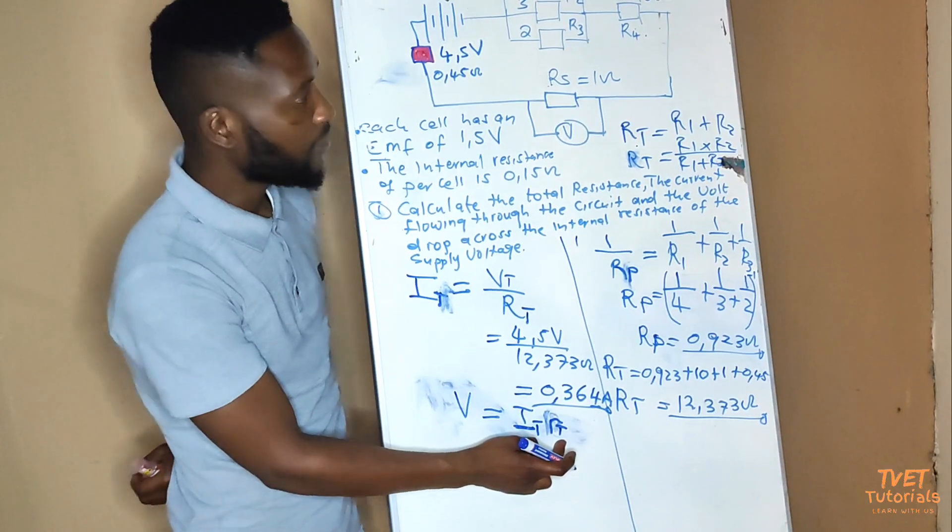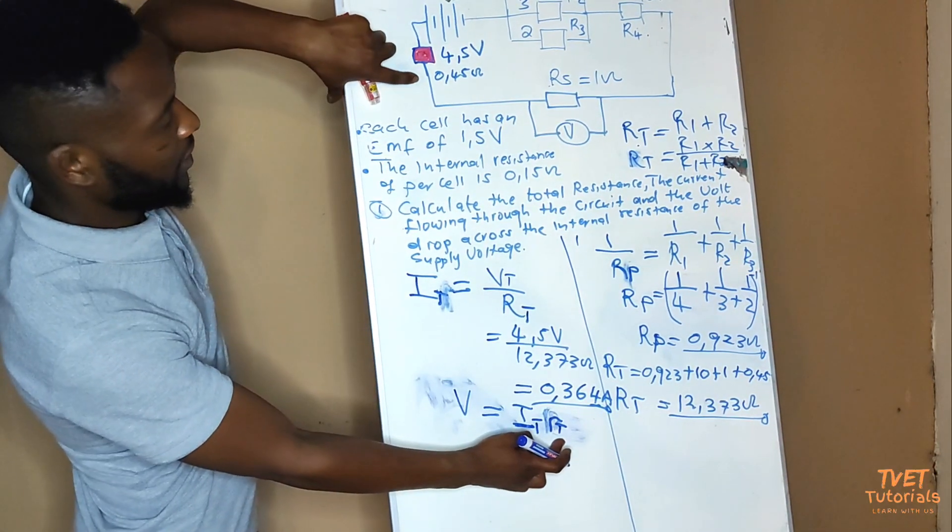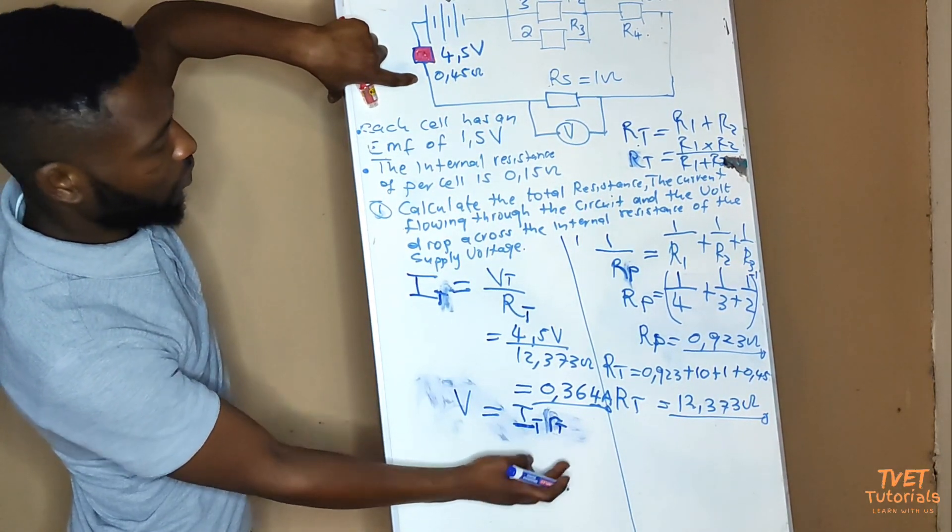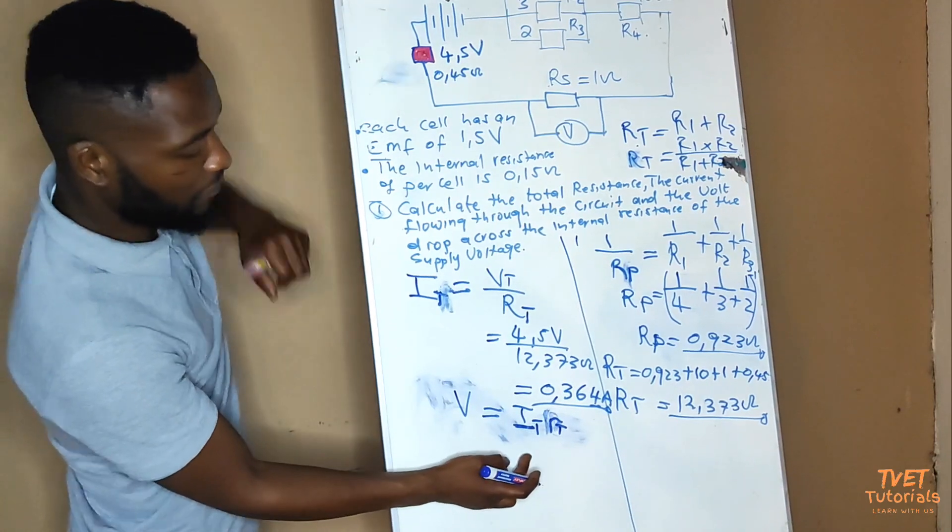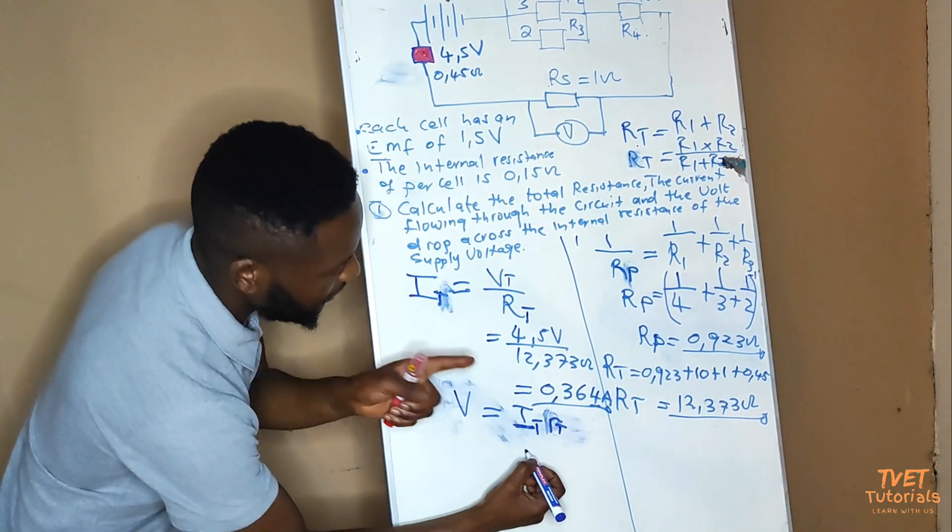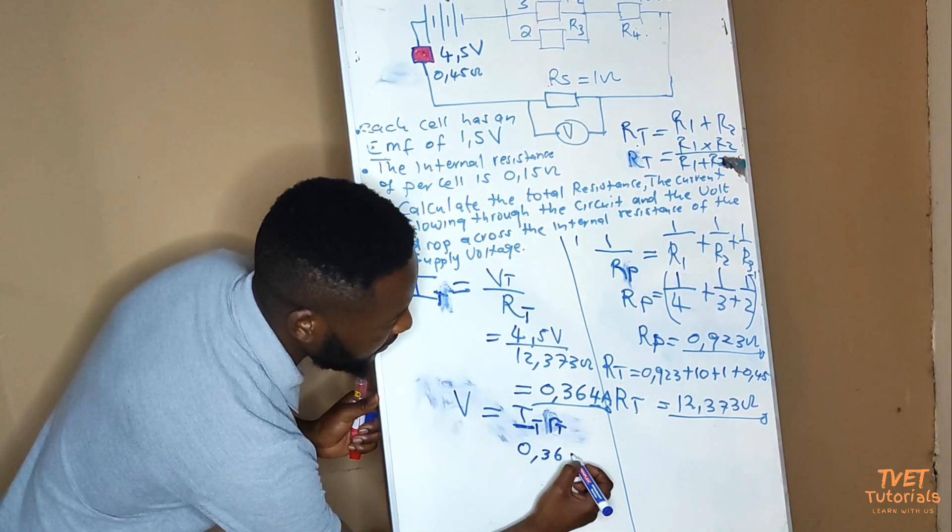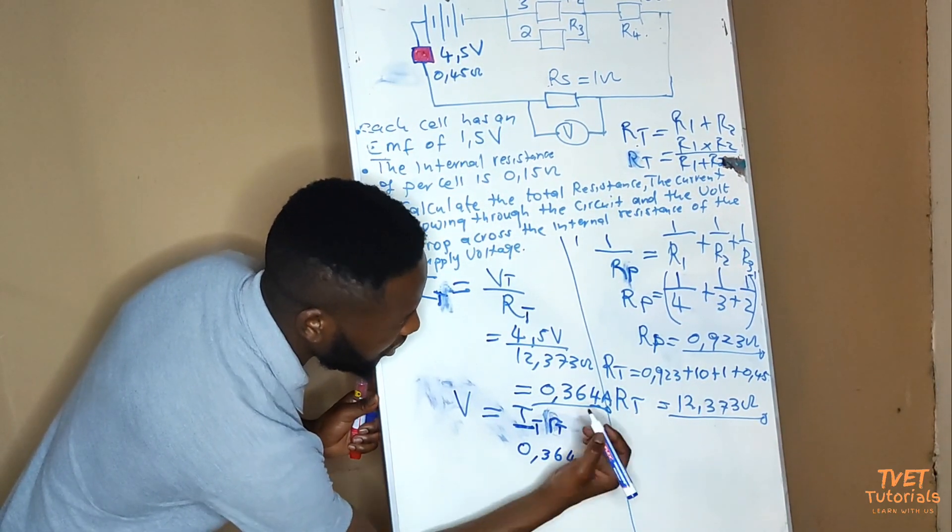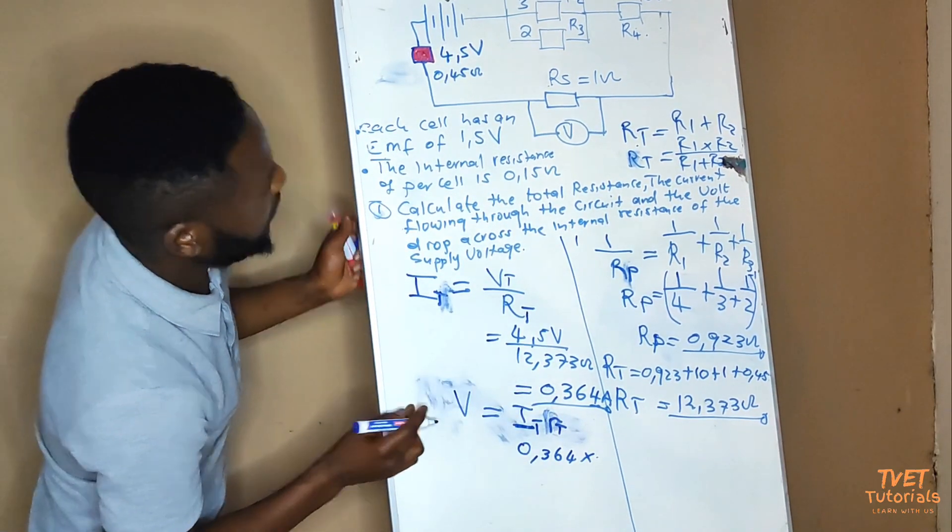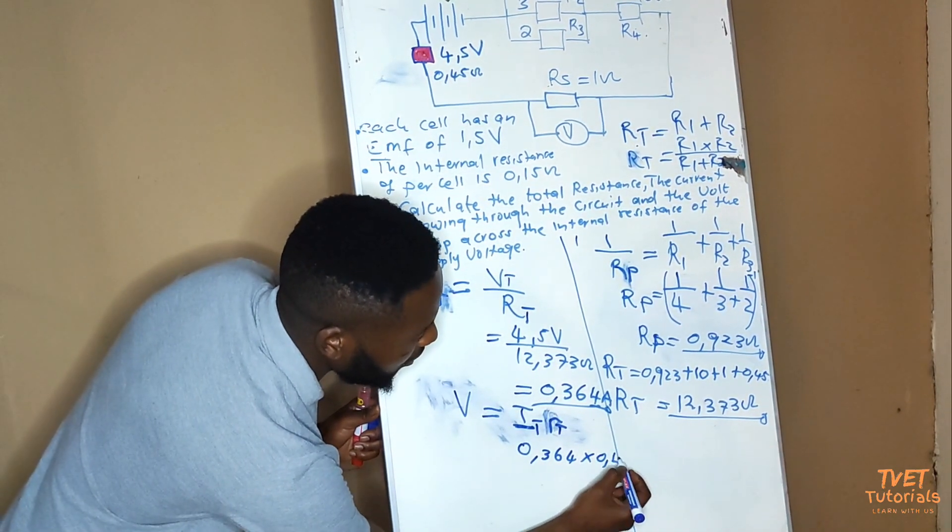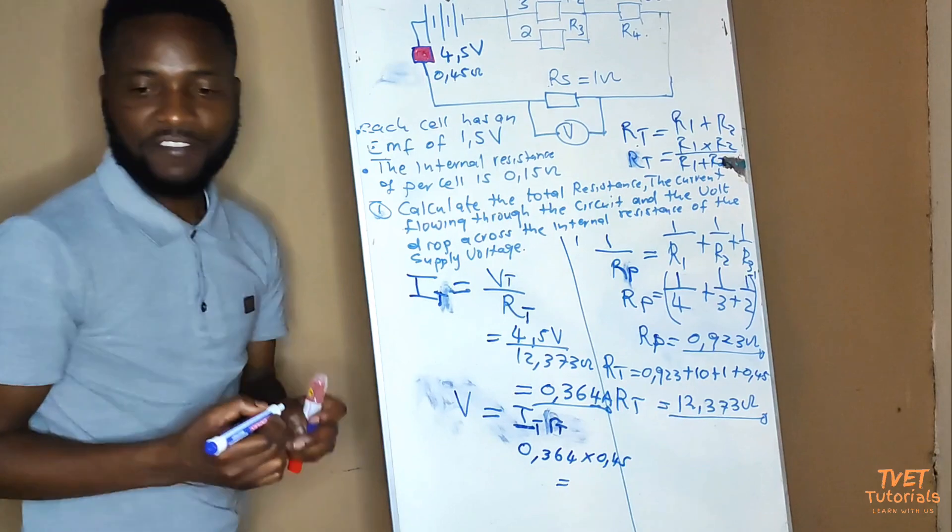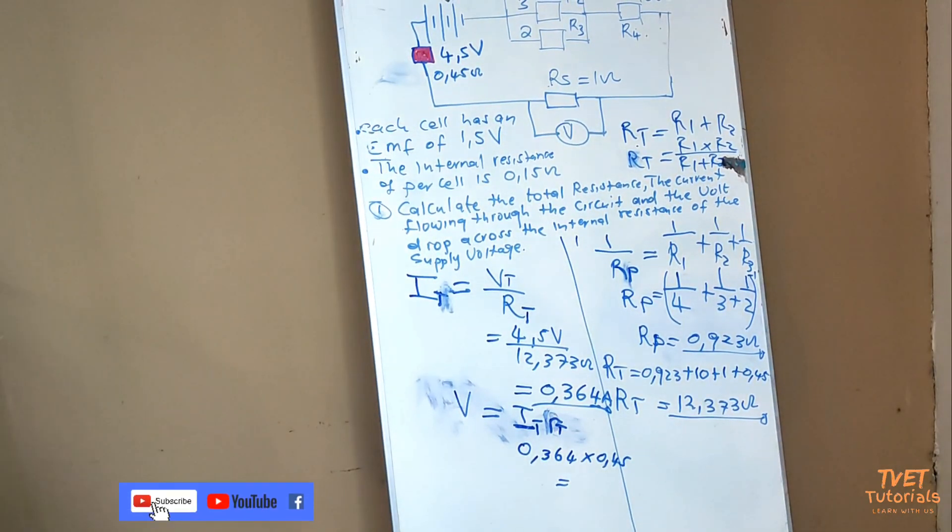Let's see, remember we have this value here, which has a magnitude of 0.045. And the total current is calculated as 0.364. So we just multiply the two there.